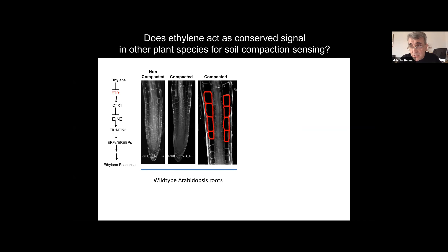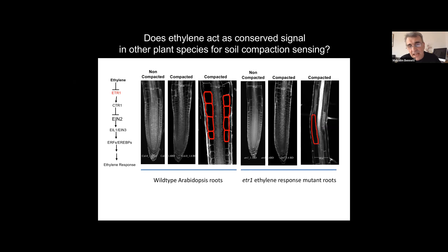We were interested whether this was also the case in other plant species. We took advantage of the genetic resources in the eudicot model Arabidopsis. When we looked at Arabidopsis roots in soil, we again saw this radial cortical expansion — lovely work that Bipin did developing miniaturised micro soil columns. When we used an ethylene receptor mutant in ETR — another ethylene insensitive mutant — the Arabidopsis mutant continued to grow in compacted soil. This tells us the ethylene signal appears to be a conserved signal in both monocots and eudicots in terms of soil compaction.